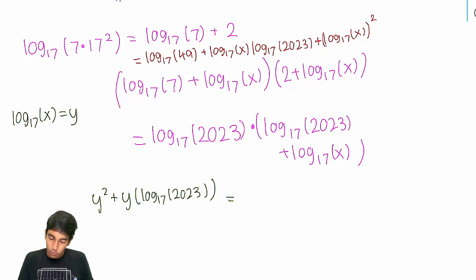We've got y² plus y times log₁₇(2023) plus some constant. But take a look here. To find the sum of the solutions to y, we only care about these two terms. We don't care about constants. So I'm just going to completely ignore constants for now. They're banned. We don't care about them.